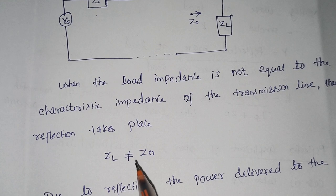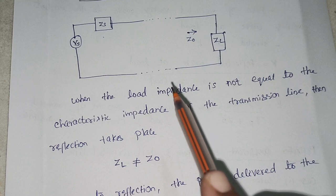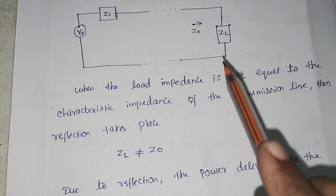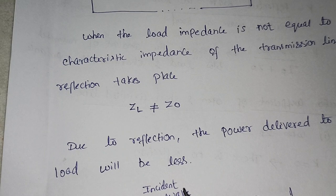This reflection will reduce the power that is being transmitted from the source to the load. That is, it does not allow maximum power to be transmitted from the source to the load. A part of power being transmitted from the source towards the load will be transmitted back to the source itself. So this results in power loss.